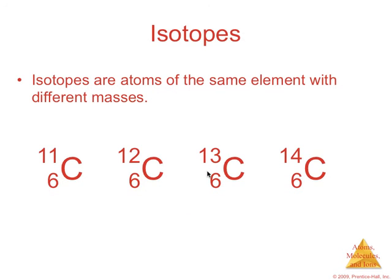Remember, isotopes are atoms of the same element that have different masses. That decimal number that you see in the periodic table is the average of all the naturally occurring isotopes. So these are four different isotopes of carbon. Note that the atomic number is the same. The mass number changes because the number of neutrons changes. The mass of each isotope is different as well.